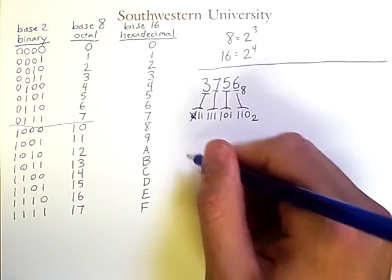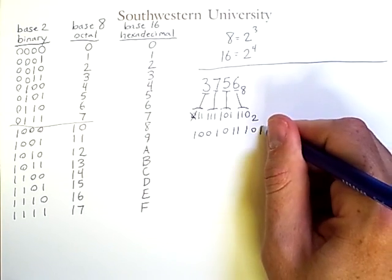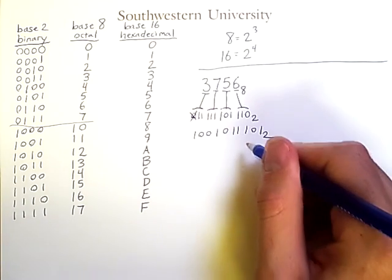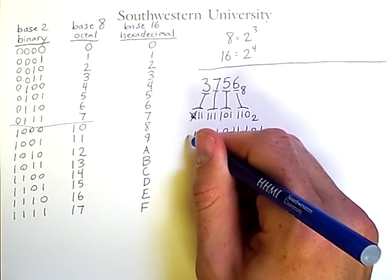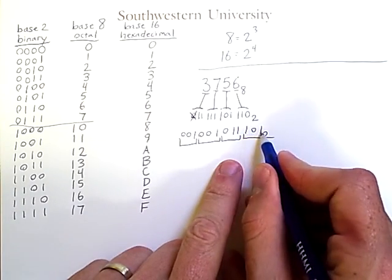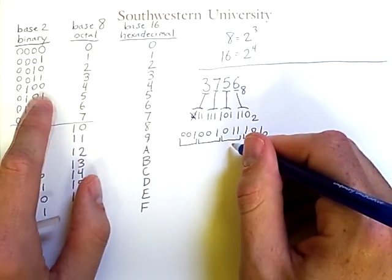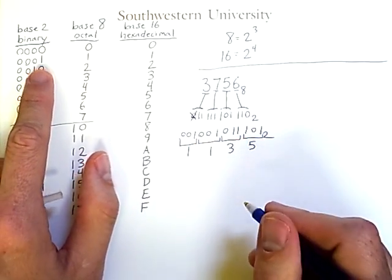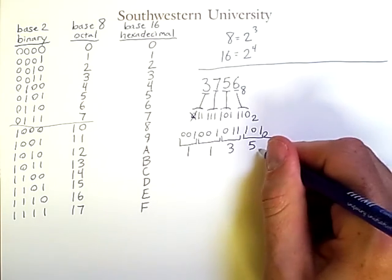Similarly, we can go from a binary number, such as 1001011101 in base 2, and convert it to octal by breaking it up into groups of 3, starting from the right. We get groups of 3, 3, 3, and 3. We look at these groups of 3 bits and find the corresponding entries: 5, 3, 1, and 1. So this binary number is equivalent to 1135 in base 8.